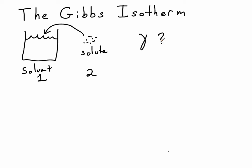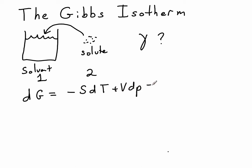It turns out we can answer that question just by using two simple equations. We'll start with the differential form of the Gibbs function. We know we always have minus S dT plus V dP, plus if we have an open system — one where we can put things in — we have to worry about the chemical potential of each chemical and how many moles that increases or decreases, summed over all the different components. Our system certainly has a surface, so we have to worry about changing the area of that surface. Increasing the area increases the Gibbs energy — it costs us energy to do that.